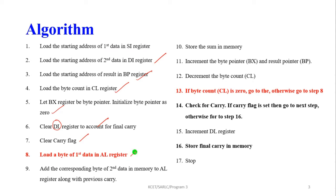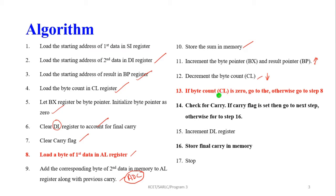Clear the carry flag. Next, load the byte of the first data into the AL register. Add the corresponding byte of the second data in memory to the AL register along with the previous carry. That is why we use the ADC instruction — ADC means addition with carry. Store the sum in the memory location, then increment the byte pointer BX and the result pointer BP.